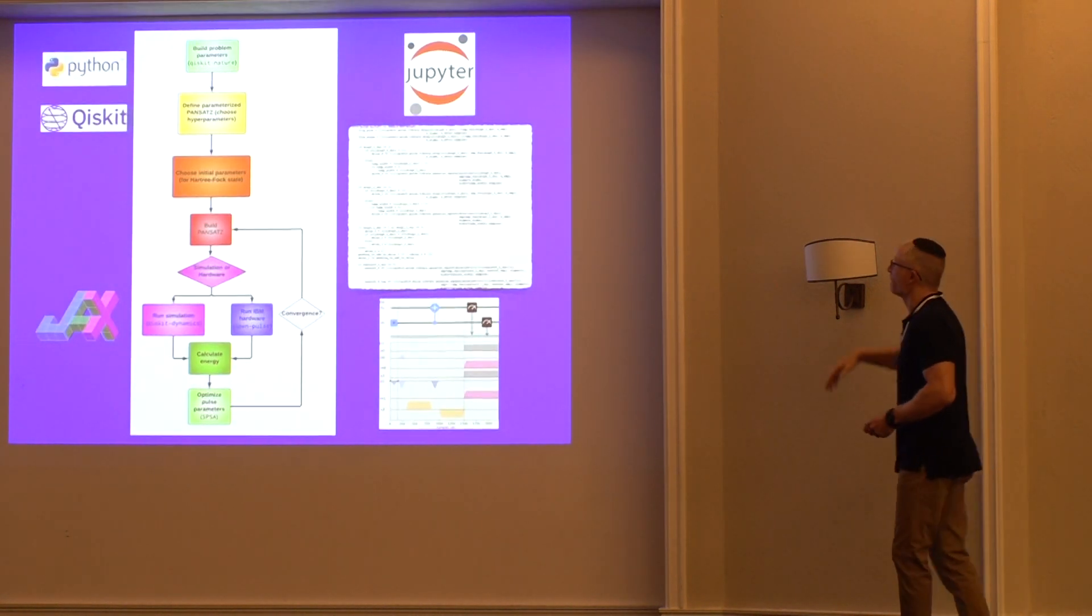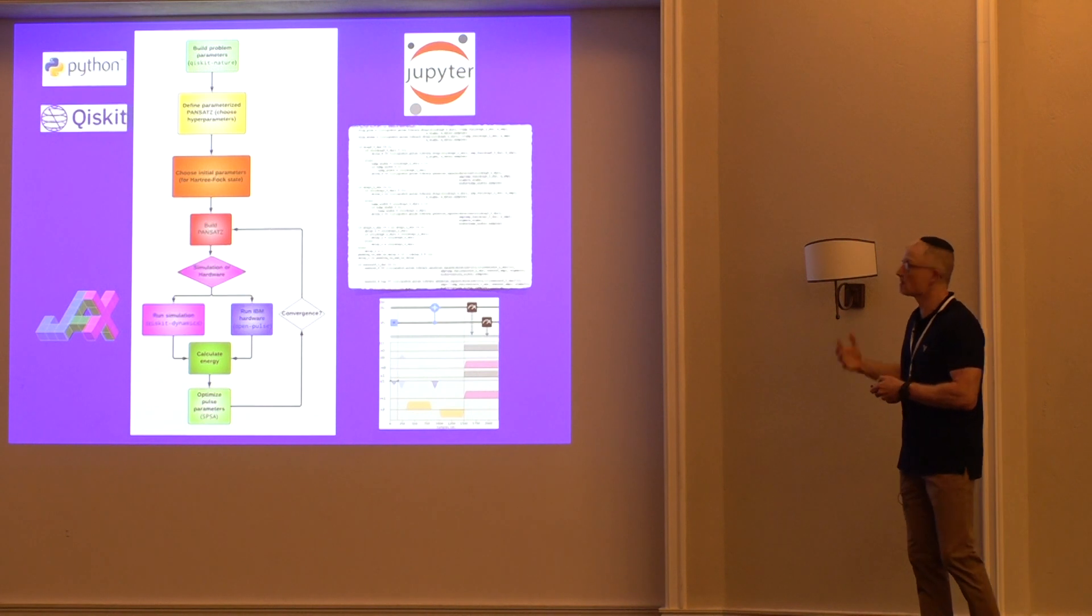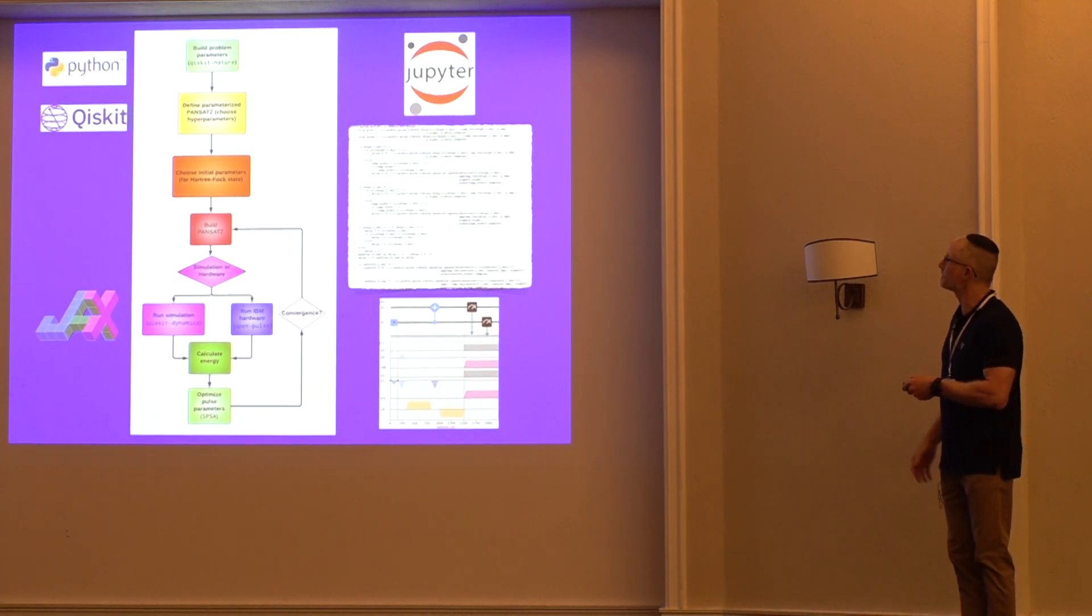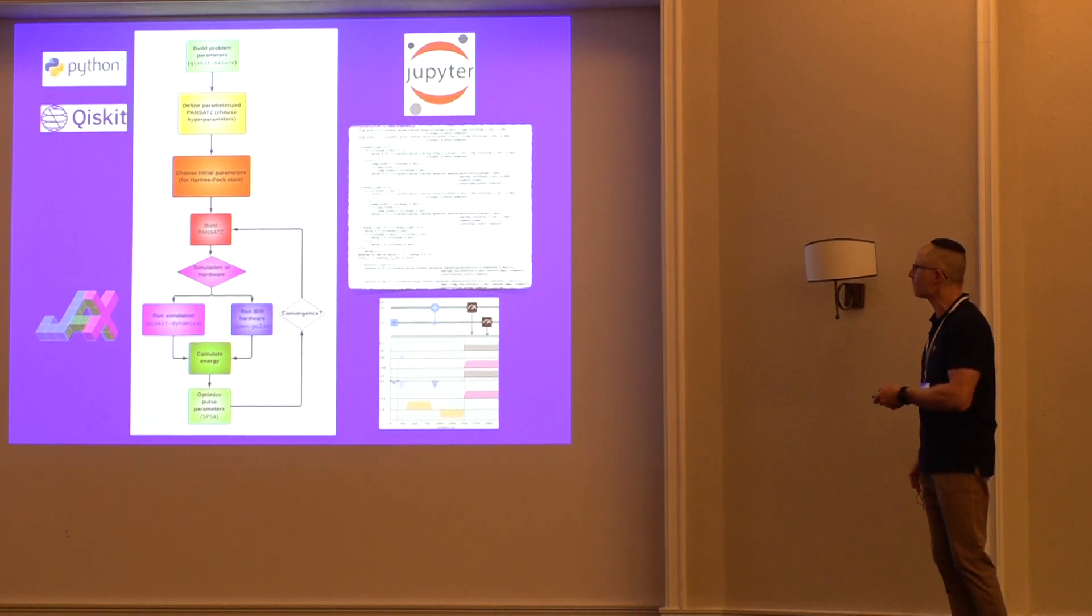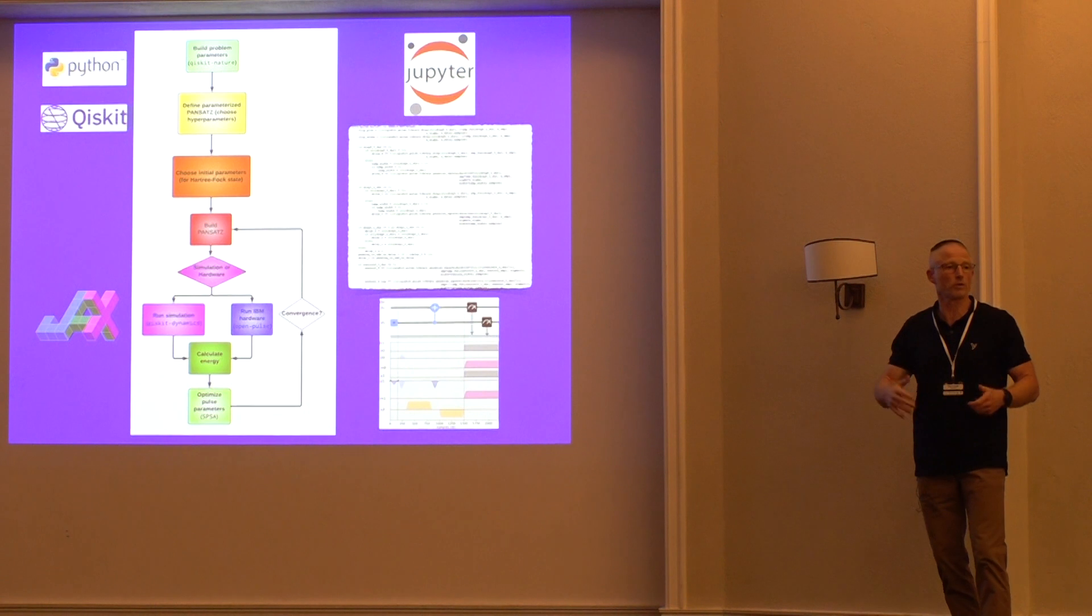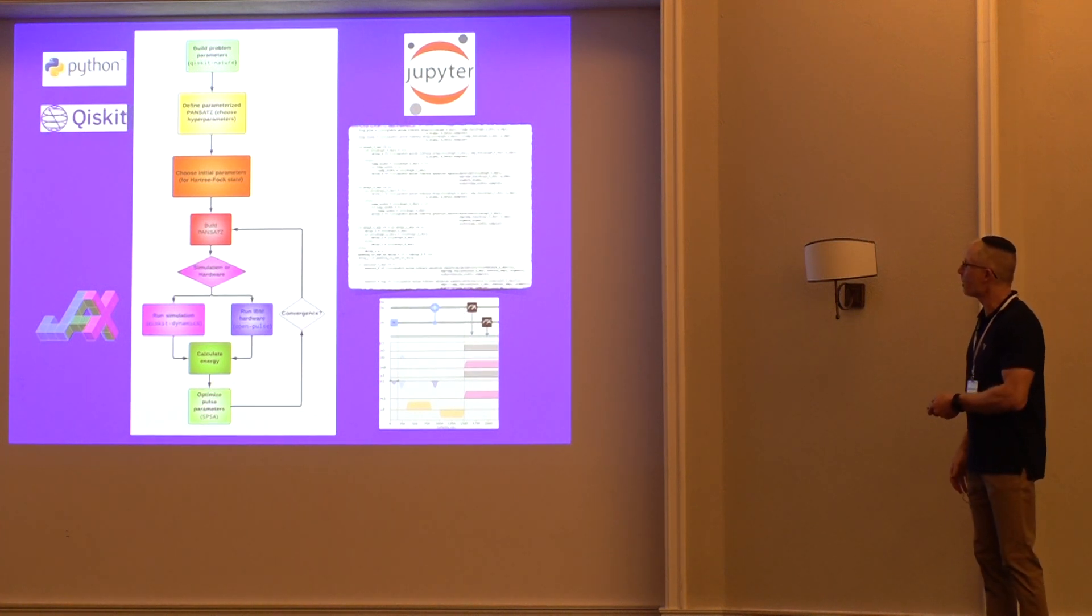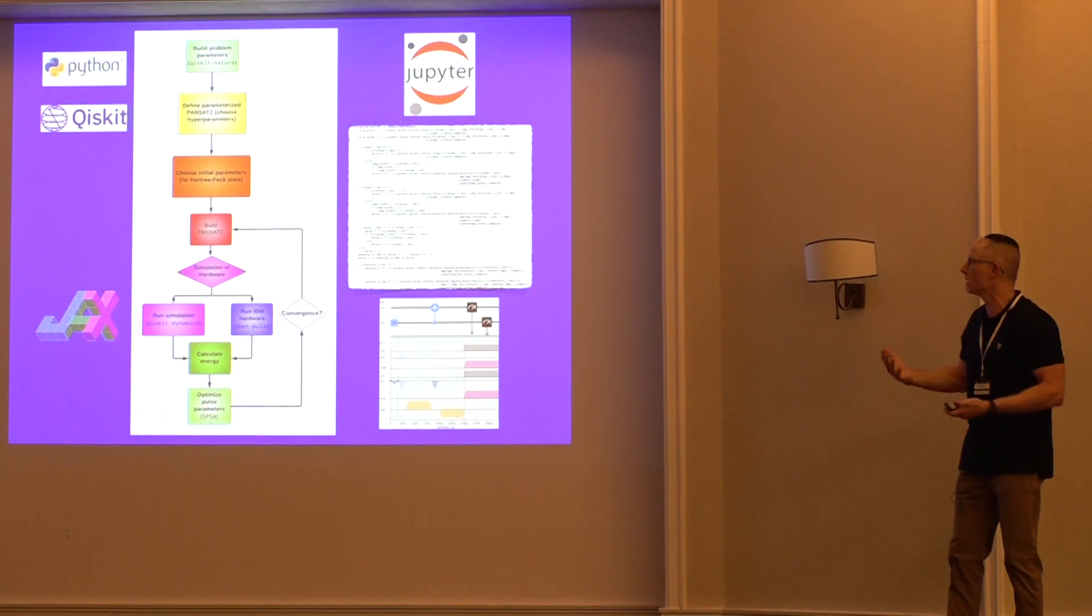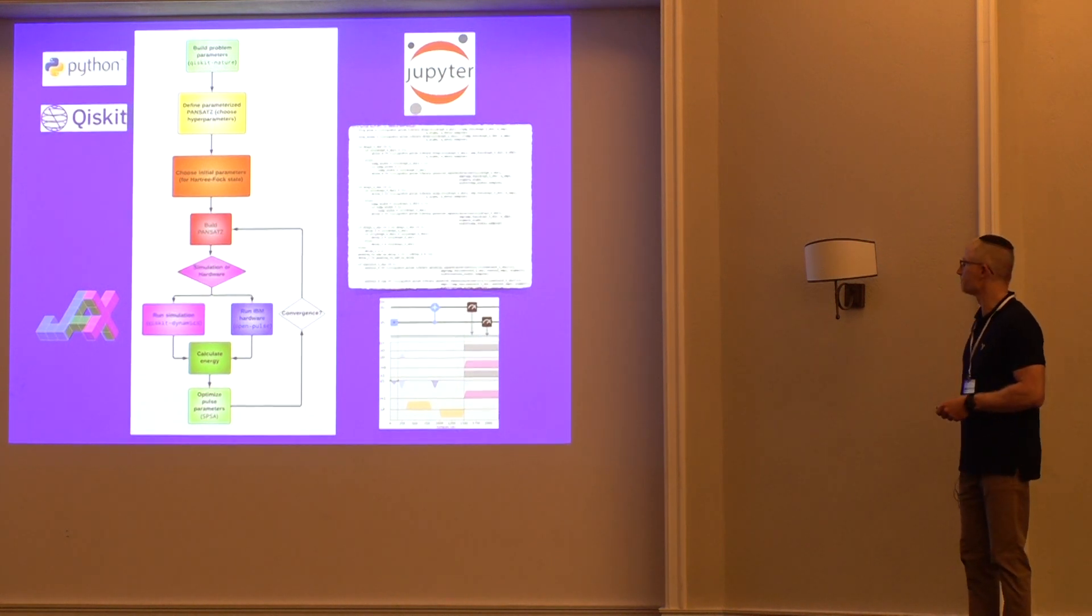Here's the overall algorithm that we've implemented. Of course, we've coded in Qiskit, Python, using Jupyter Notebooks. We start by building the parameters using Qiskit Nature. Then we define the parameterized pansatz. We choose our hyperparameters. We choose our initial parameters for setting up the Hartree-Fock state, which is a typical initial state for these types of calculations. Then we build our pansatz, and there's a little bit of a code snippet from there. Take a picture, zoom in, and you'll have it too. Then we choose if we want to do simulation or hardware. On the simulation side, we use Qiskit Dynamics, and we're using JAX, which is Google's souped-up NumPy on the GPU. It's amazing. We're very happy with that because I bought GPUs and I need to use them. And then we also run on the hardware using Qiskit's OpenPulse, which has really enabled this whole field to develop. Then we calculate the energy, we optimize the pulse parameters, and then we check for convergence and repeat.